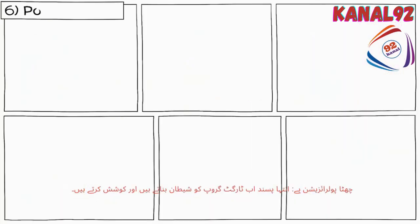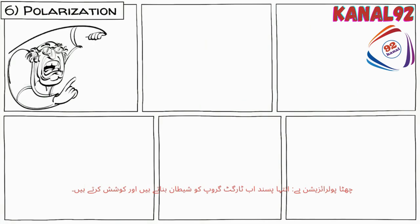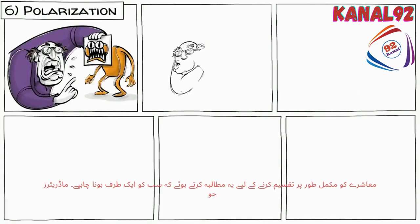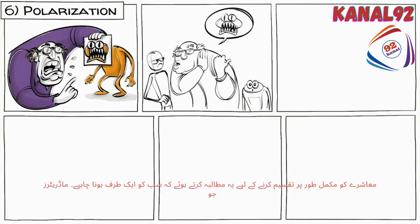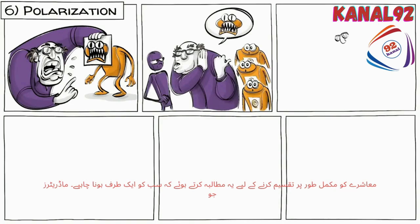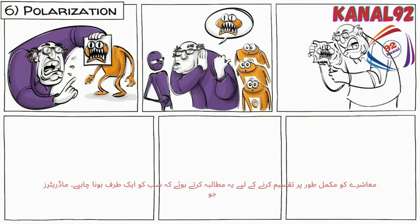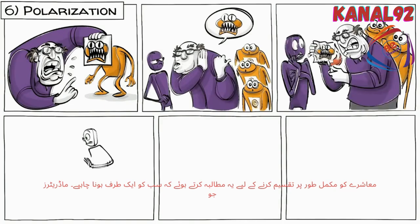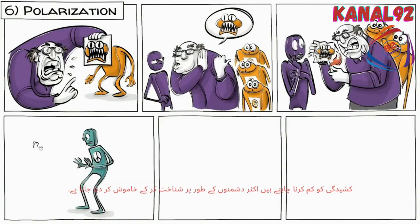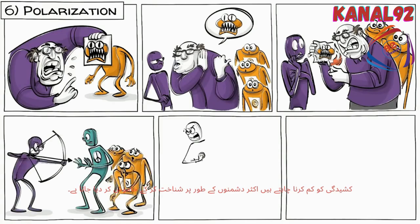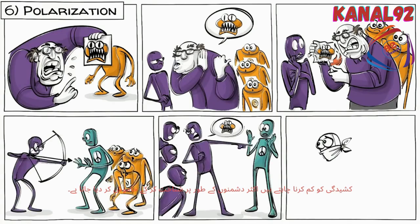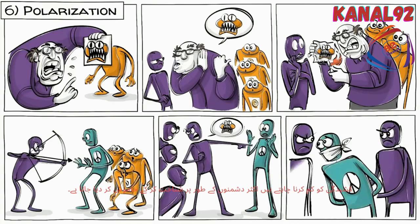Sixth is polarization. Extremists now demonize the targeted group and try to fully divide society by demanding that everyone must take a side. Moderators who want to reduce the tensions are often identified as enemies and silenced.